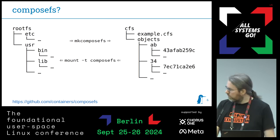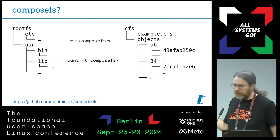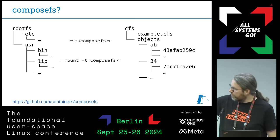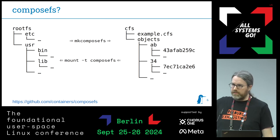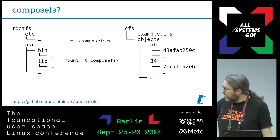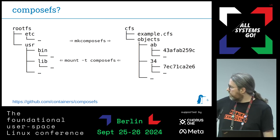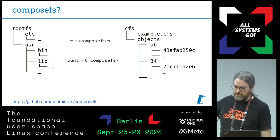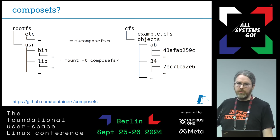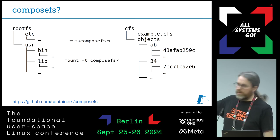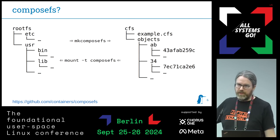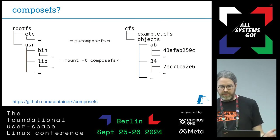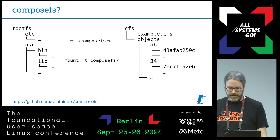Just a quick summary for someone who hasn't seen ComposeFS yet. You have your filesystem tree on the left side which contains directories and files, you run MK ComposeFS, and you get a .cfs metadata image which is an EROFS image, and you get an object store — files named after their hash with content and no other metadata, so they all belong to root for example.